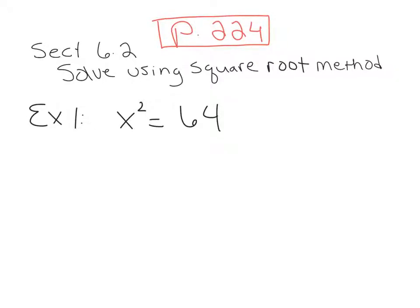We're working in intermediate algebra, section 6.2: Solving Quadratic Equations Using the Square Root Method, starting on page 224. In the last section, we solved using factoring, which is generally the fastest way to solve a quadratic equation. However, not every type of equation will factor. It does turn out that this equation will factor, but we're going to use the square root method as the directions indicate.